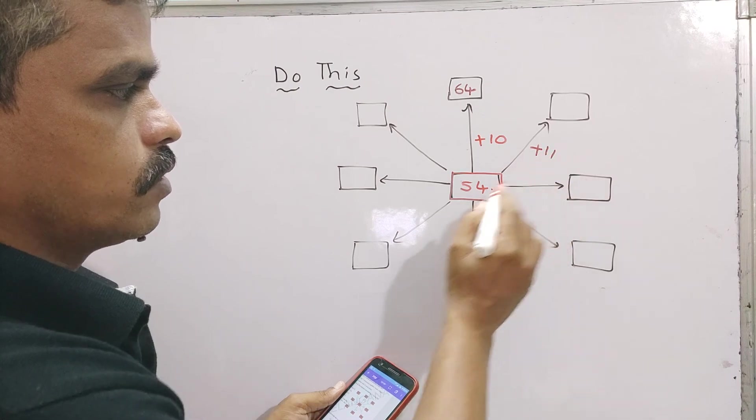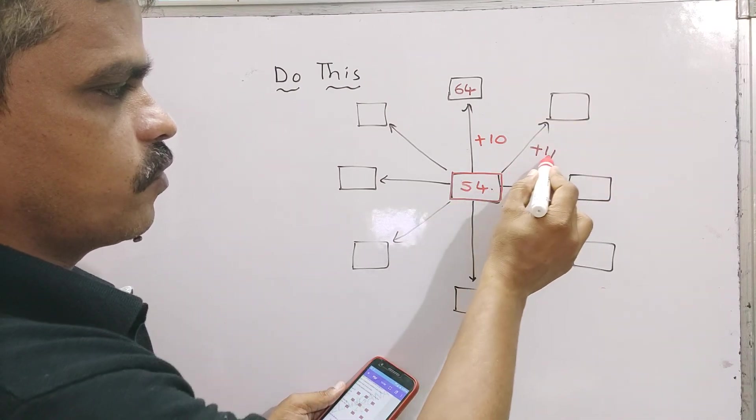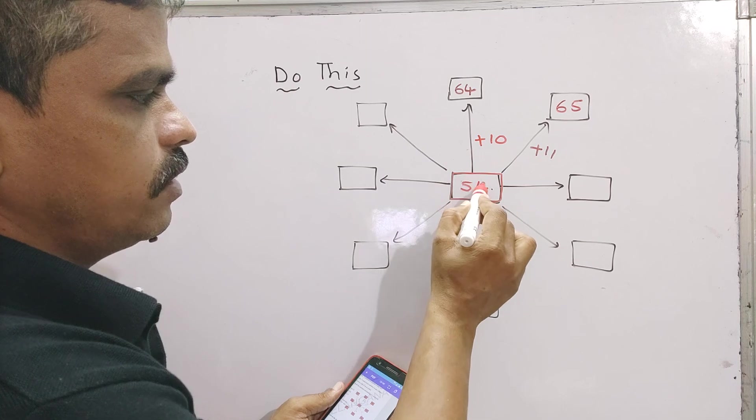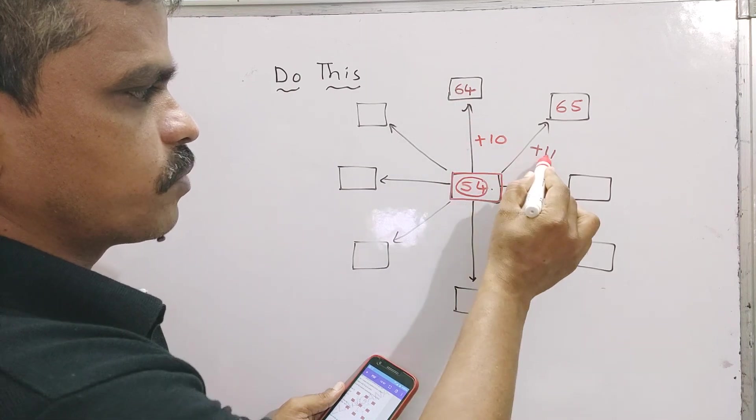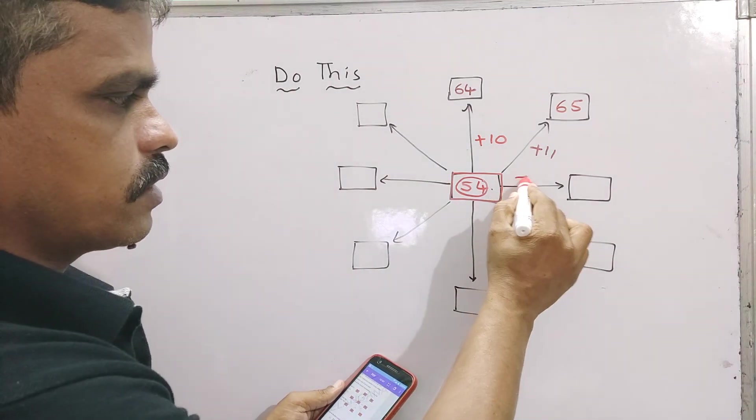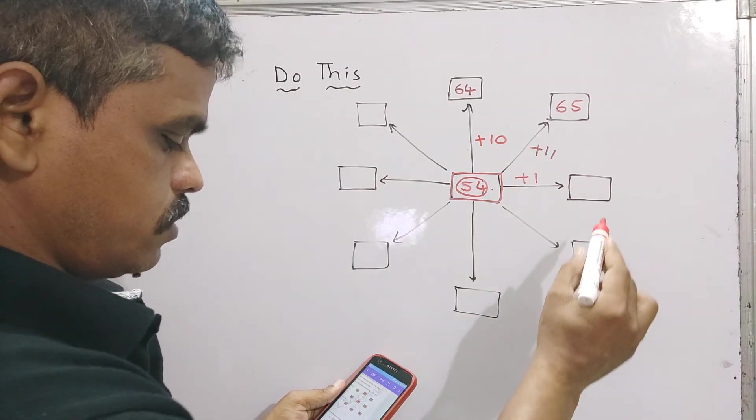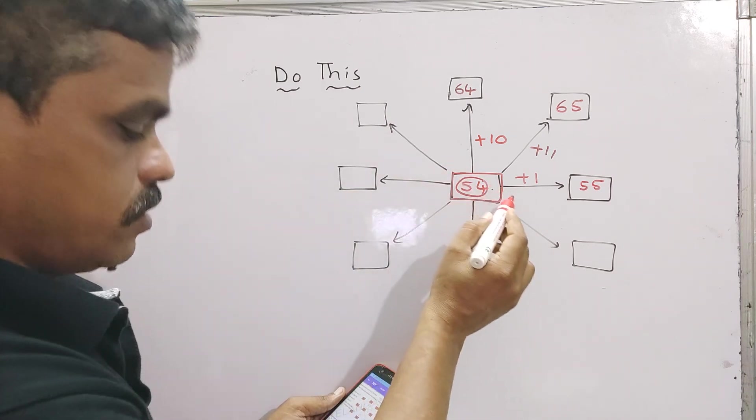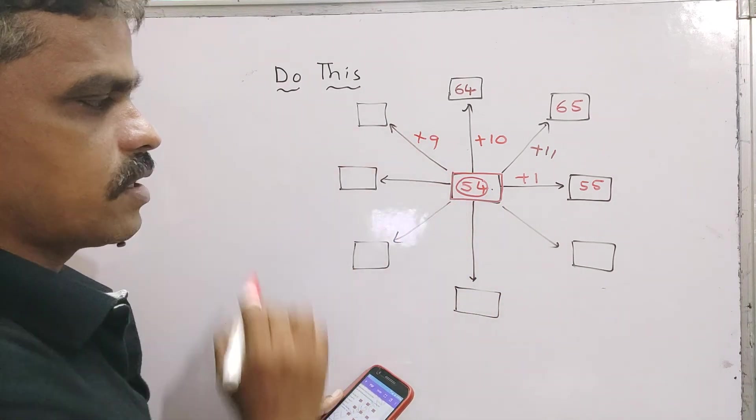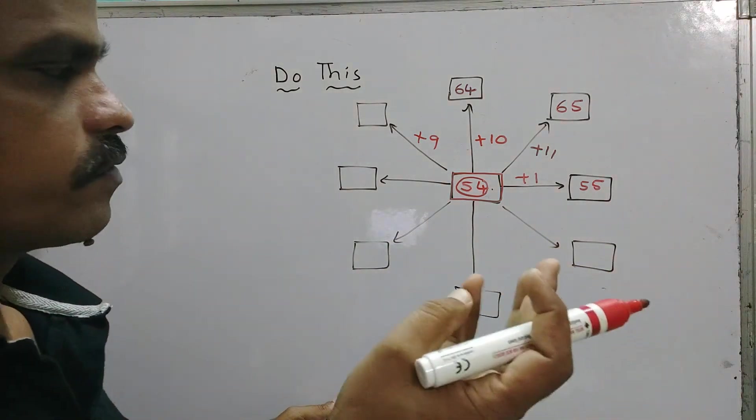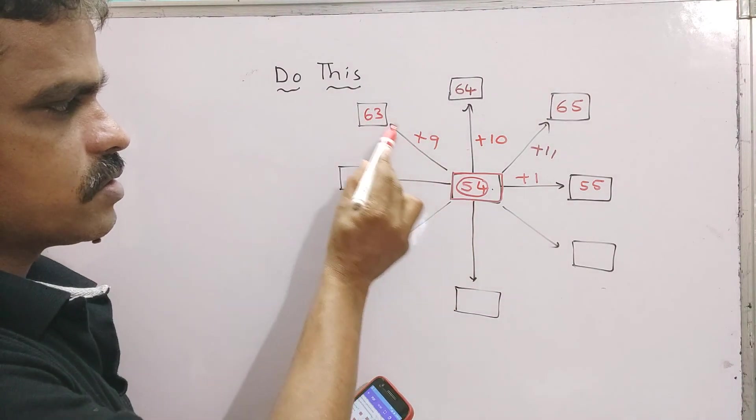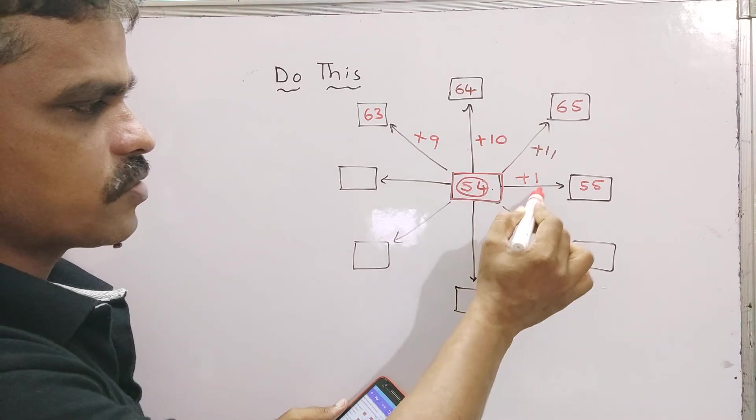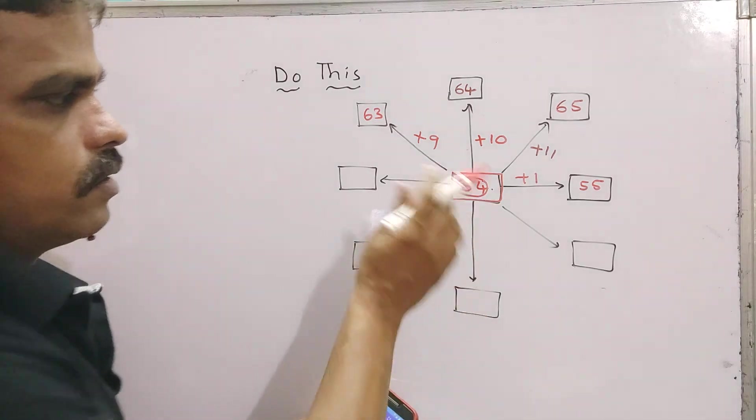Plus 11, see this is a corner side, so 54 plus 11 equals 65. So here we added, this is the center number 54 plus 10 is 64, 54 plus 11 is 65. Next plus 1, that is 55. Next remaining is plus 9. 54 plus 9, just count 54, 55, 56 like that, you will get 63. So do opposite side.